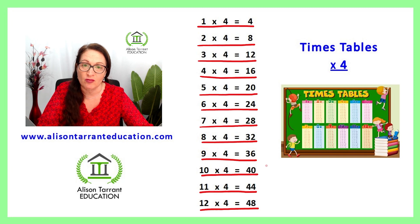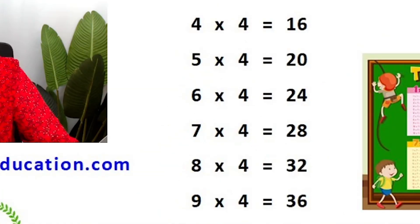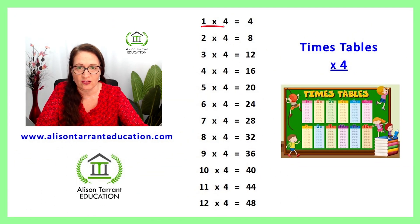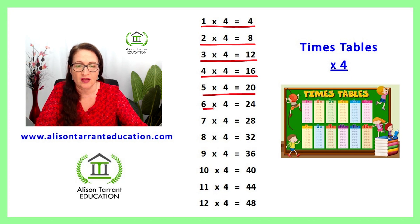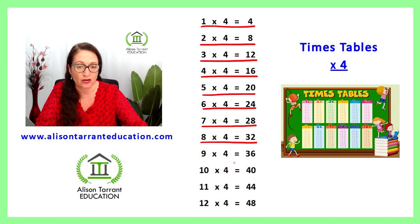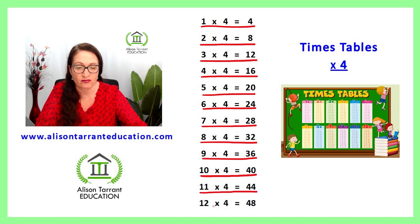Well done. Let's practice that again. 1 times 4 is 4, 2 times 4 is 8, 3 times 4 is 12, 4 times 4 is 16, 5 times 4 is 20, 6 times 4 is 24, 7 times 4 is 28, 8 times 4 is 32, 9 times 4 is 36, 10 times 4 is 40, 11 times 4 is 44, 12 times 4 is 48.